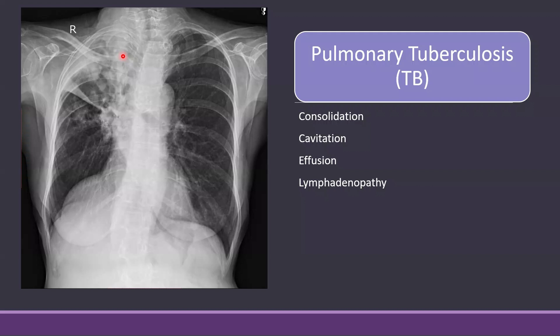The differential for consolidation is usually infection; it can also be seen in interstitial lung diseases and certain types of cancers like bronchoalveolar carcinoma or adenocarcinoma. Consolidation can also be seen in heart failure, in which case it is usually bilateral and at the bases.